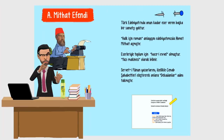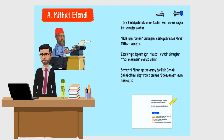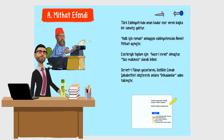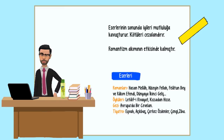Sıradaki yazarımız Ahmet Mithat Efendi. Türk edebiyatında onun kadar eser veren başka bir sanatçı yoktur. Halk için roman anlayışını edebiyatımızda Ahmet Mithat açmıştır. Eserleriyle toplum için hece-i evvel olmuştur. Yazı makinesi olarak bilinir. Servet-i Fünun yazarlarını, özellikle Cenab Şahabettin'i eleştirerek onlara 'dekadanlar' adını takmıştır. Eserlerinin sonunda iyileri mutluluğa kavuşturur, kötüleri cezalandırır. Romantizm akımının etkisinde kalmıştır.